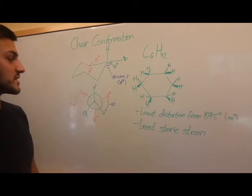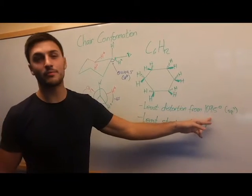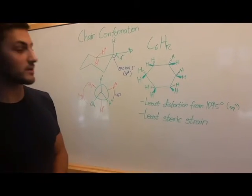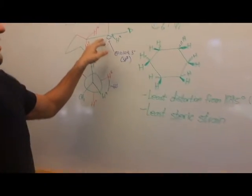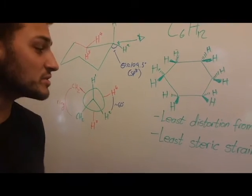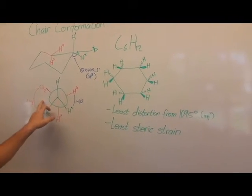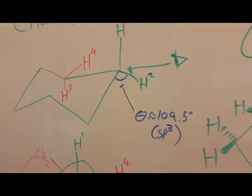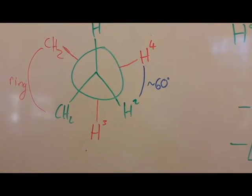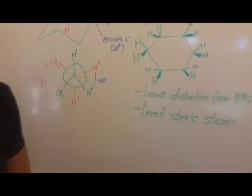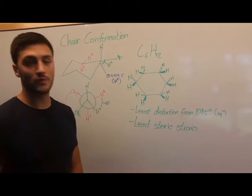One of the main reasons it's the most stable is because it has the least torsional strain between the carbon molecules, and that's because it has the least distortion from 109.5 degrees, which is the ideal bond angle for sp3 hybridized carbons. Additionally, the six-membered ring provides the least steric strain, and we can see this through a Newman projection. Looking through this bond, we can see that all of the hydrogens are about 60 degrees between them and they are staggered, and there's no Gaussian interaction between them, which limits the steric strain.